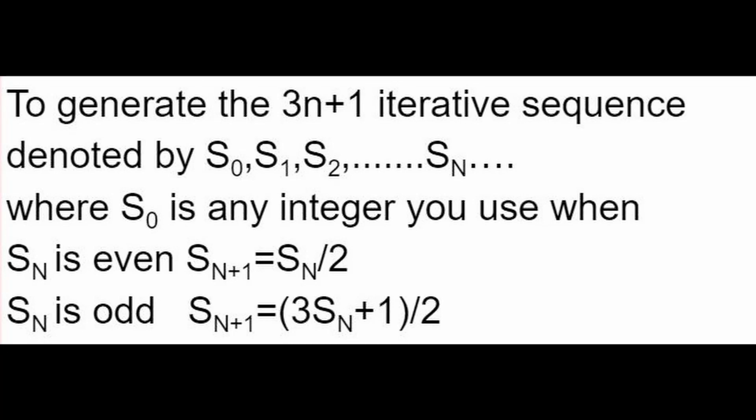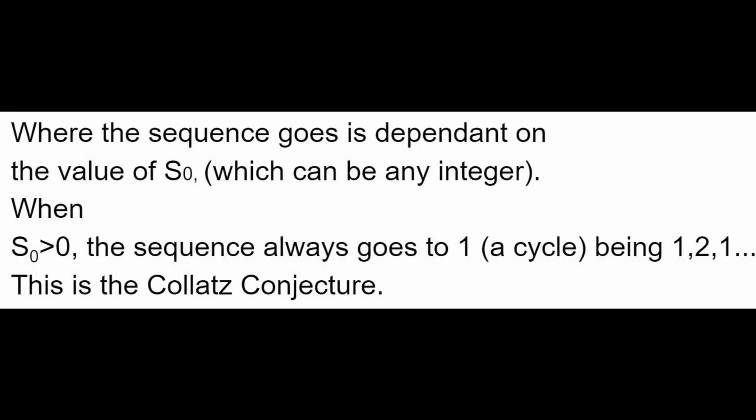To generate the 3n plus 1 sequence, denoted by S0, S1, all the way to Sn: when Sn is even, Sn+1 equals Sn divided by 2; and when Sn is odd, Sn+1 equals 3·Sn plus 1, divided by 2. Where the sequence goes is dependent upon the value of S0, which can be any integer.